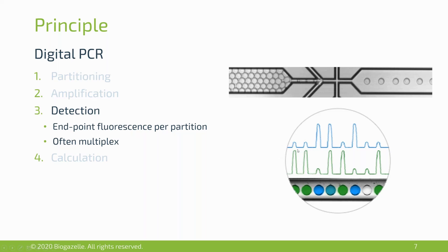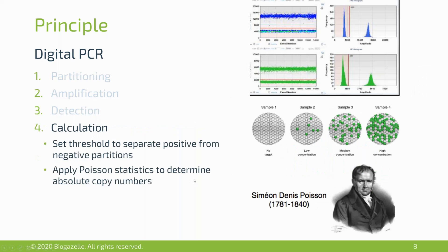Having generated an analysis of positive and negative droplets, we can perform calculations. First, we need to distinguish positive from negative droplets based on fluorescence amplitude or intensity. This can be done in a 1D view or in a density plot, placing a threshold between the peak intensity of background signal — the negative droplets — and the peak intensity of the positive droplets. This example shows a very good assay with a clean separation between positive and negative droplets.